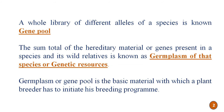A whole library of different alleles of a species is known as a gene pool. The sum total of the hereditary material or genes present in a species with its wild relatives is known as germplasm of that species, or in a broad sense, plant genetic resources. The germplasm or gene pool is the basic material with which a plant breeder has to initiate his breeding program.